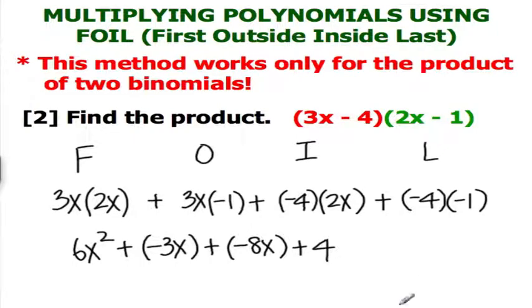Notice that we do have some like terms, negative 8x and negative 3x. So therefore, combine those together. And your final solution is 6x squared, minus 11x, plus 4.